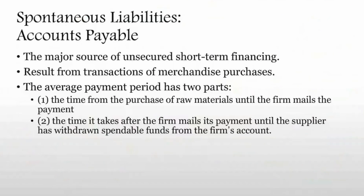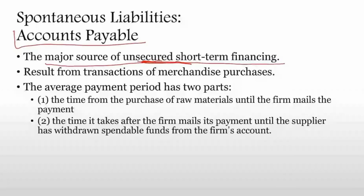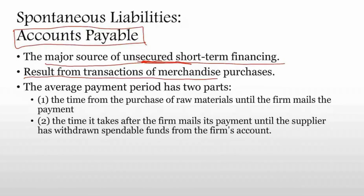Let us come back to the discussion of accounts payable. Accounts payable is actually the major source of short-term financing — unsecured short-term financing, not secured. This is the major source. Accounts payable is a source because you will actually keep other people's money within your business until you pay it. Accounts payable results from merchandise purchases: when you purchase from the supplier, you have your supplier's money with you.